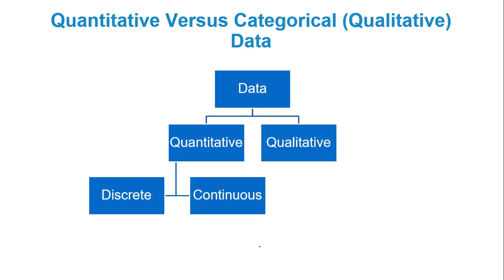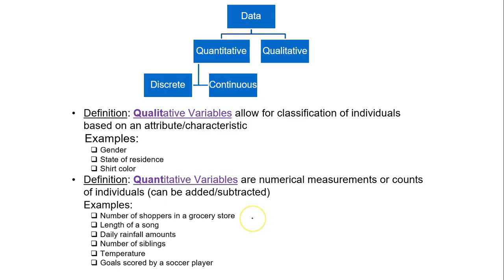Next, quantitative versus categorical or qualitative data. So we can take data and break it up into two categories. You have quantitative, then you have qualitative. If data are quantitative, data is a plural word, then it can be further classified as discrete or continuous. So qualitative variables or categorical variables or data. If you look at the word qualitative, you see the beginning of the word. It looks like the word quality almost. And that's what qualitative variables are. You're looking at qualities, attributes, characteristics. For instance, someone's gender, someone's state of residence, someone's shirt color, anything that identifies somebody. It could even include their social security number. That's an identifier. That's an attribute or characteristic. It's a label given to something.